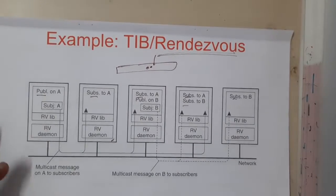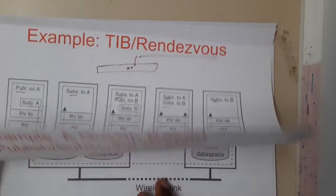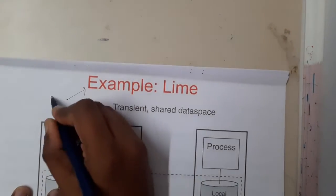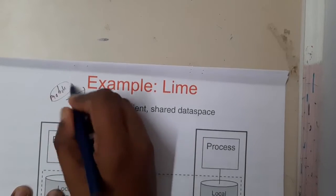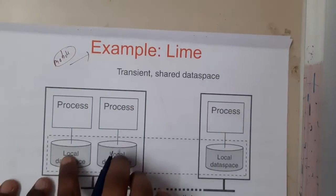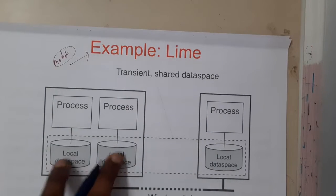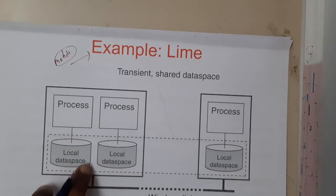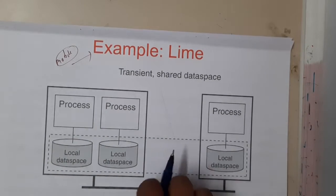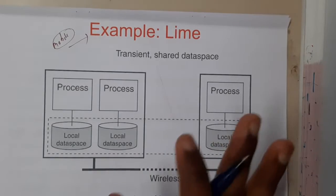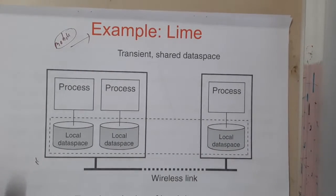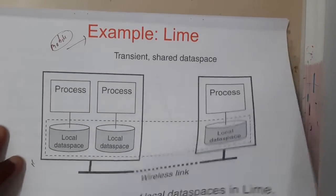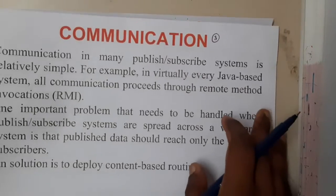This architecture is also used in mobile devices. Whenever you are using a mobile device, each and every process will be communicating with local databases — basically your own phone's databases. Based on that, if any request is made, the data will be fetched from the internet from a particular site and shown to you. This might not seem directly related but it is given in the PPT and textbook, so that is why it is being explained.